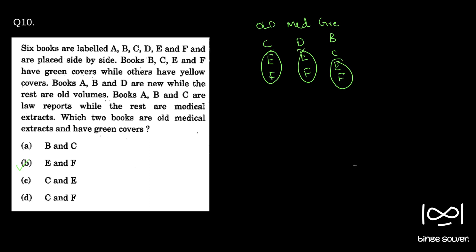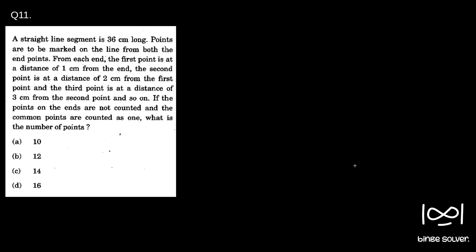Moving on to question 11. A straight line segment is 36 centimeters long. Points are to be marked on the line from both endpoints. From each end, the first point is at a distance of 1 centimeter from the end, the second point is at a distance of 2 centimeters from the first point, the third point is at a distance of 3 centimeters from the second point, and so on. If the points on the ends are not counted and the common points are counted as 1, what is the number of points?